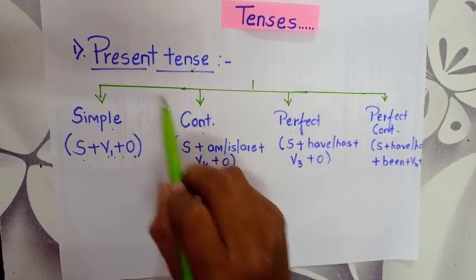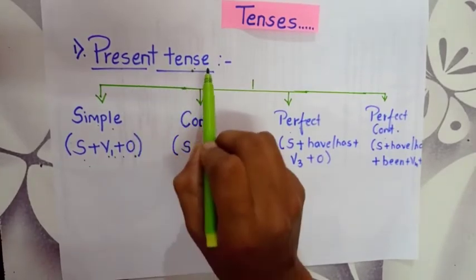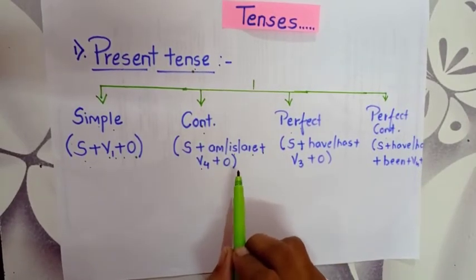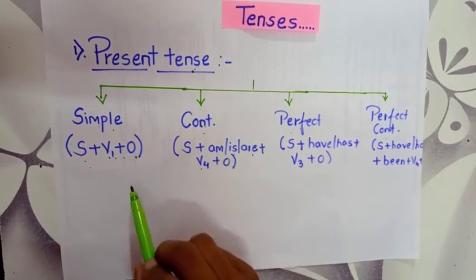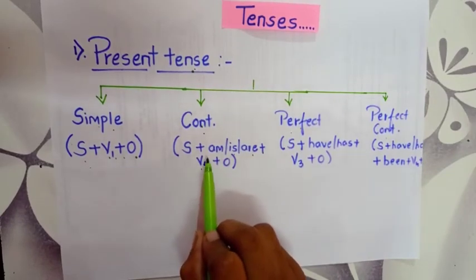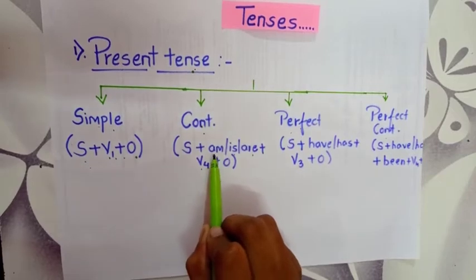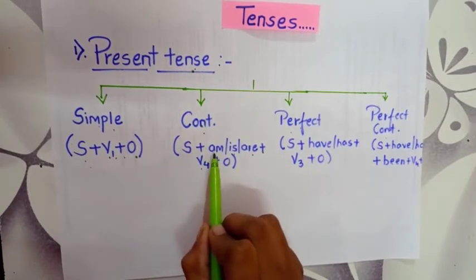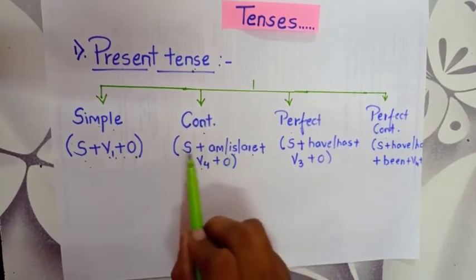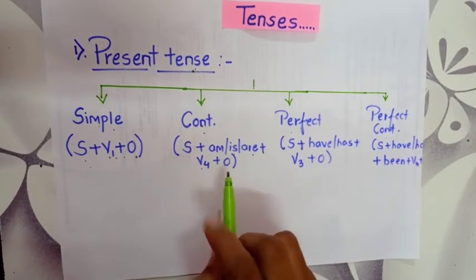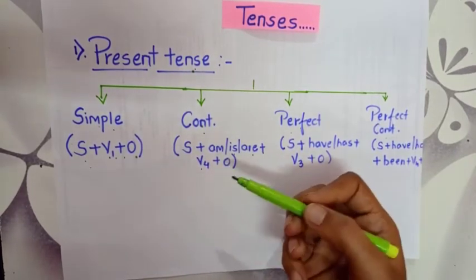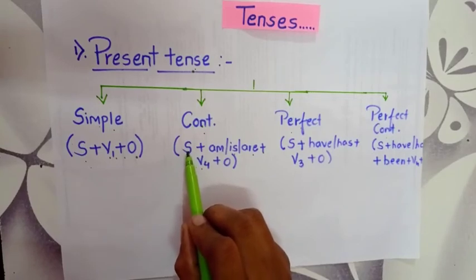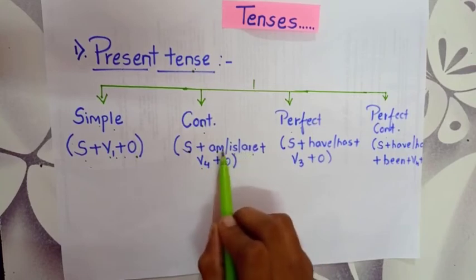For continuous present tense, the formula is S plus am/is/are plus V4 plus object. S is subject, O is object, and V4 is the verb plus ING form. Am, is, or are should be used as per the subject. If the subject is I, use am. If the subject is he, she, or it, use is. If the subject is plural — they, boys, girls — use are.